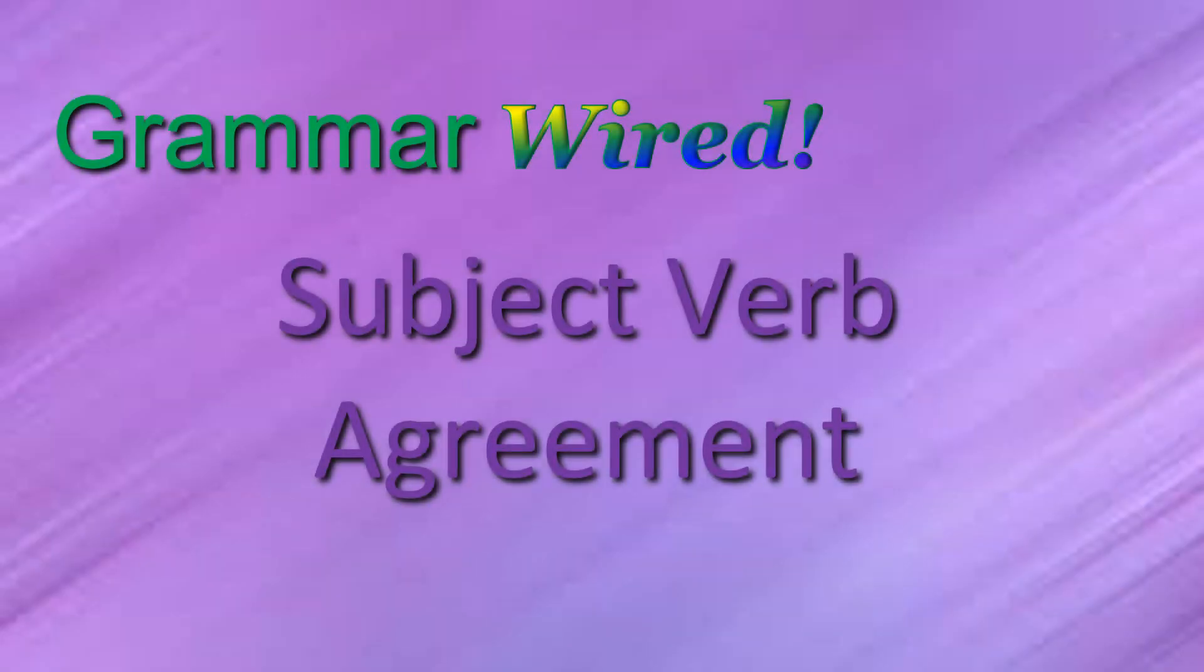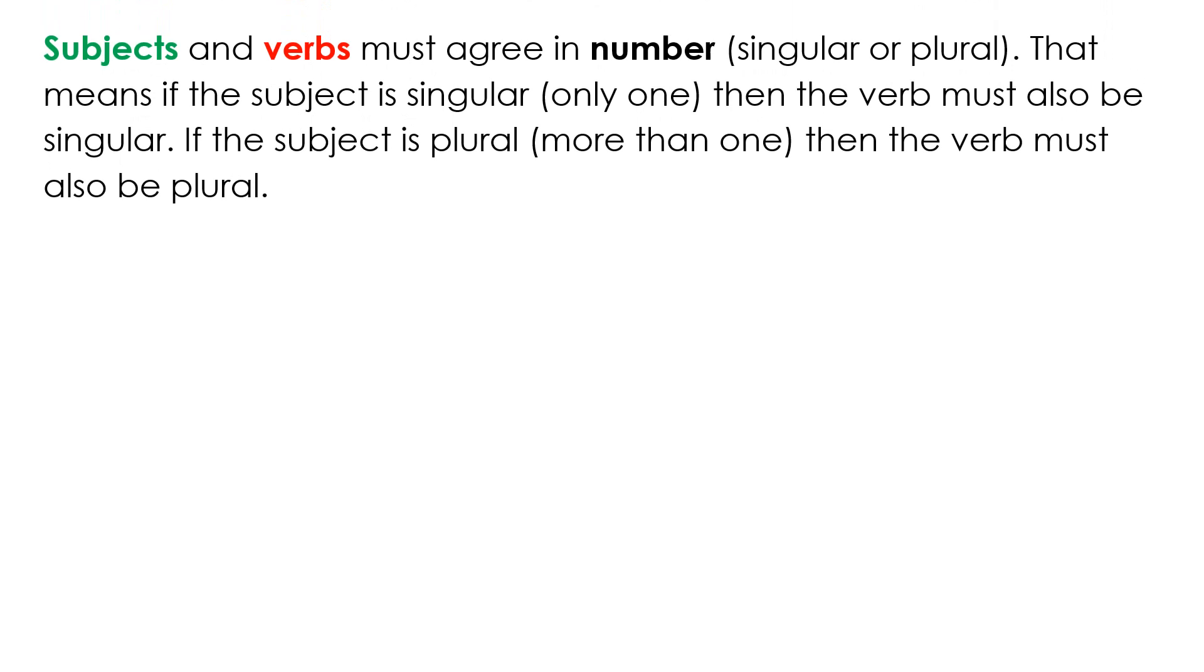Subject-verb agreement. Subjects and verbs must agree in number, singular or plural. That means if the subject is singular, only one, then the verb must also be singular. If the subject is plural, more than one, then the verb must also be plural.